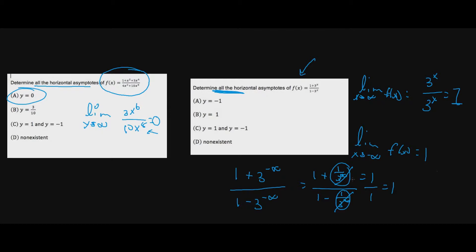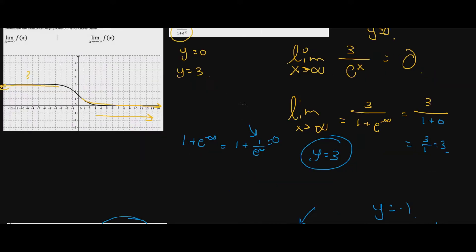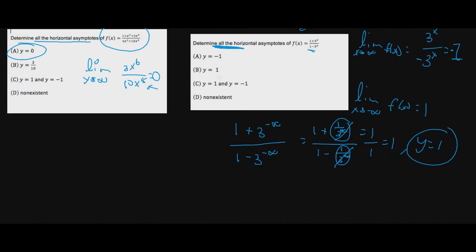Actually, there should be a negative sign, so this becomes negative one. So from the right the horizontal asymptote is y equals negative one, and from the left it's y equals one. The answer is C.